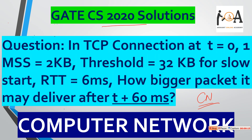The question is: in a TCP connection at T equals 0, 1 MSS equals 2KB, threshold value is given as 32KB for slow start, RTT is 6ms. How big a packet can it deliver after T plus 60ms?